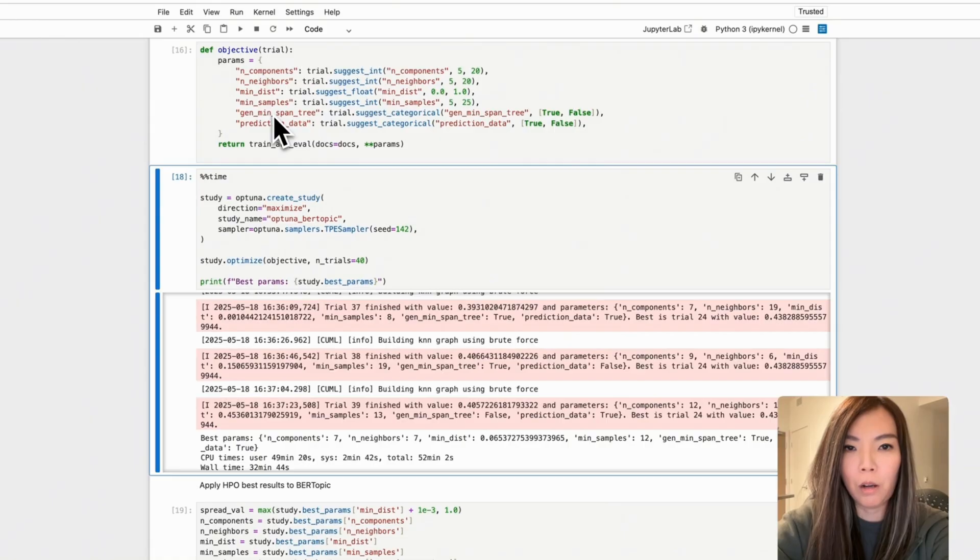We also include two categorical options, gen_min_span_tree and prediction_data. These ranges and choices provide a comprehensive search space for Optuna to explore.